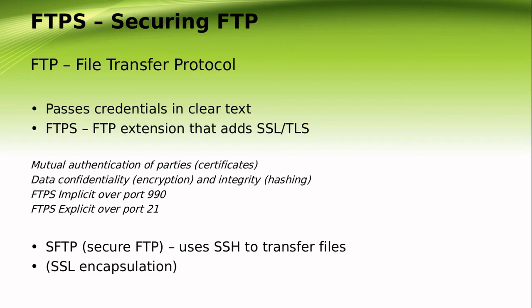FTPS uses more than one port and can be either implicit or explicit. FTPS uses TCP port 990 for commands and a passive port for data in implicit mode, and TCP port 21 for commands in explicit mode. Either SFTP or FTPS can be used in an enterprise network.